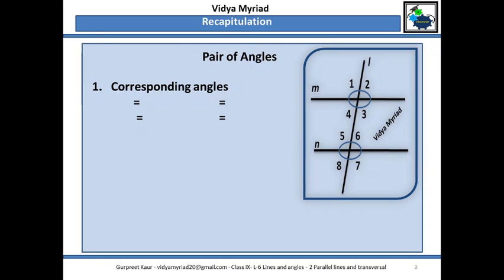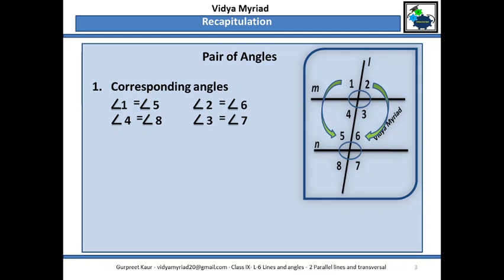Number one, we will talk about the corresponding angles. If you look here, angle 1 is equal to angle 5. That means if angle 1 is 60 degrees, then angle 5 will also be 60 degrees. Same way, angle 2 will be equal to angle 6, angle 4 will be equal to angle 8, and angle 3 will be equal to angle 7. Whenever we solve these types of questions, we will mention in brackets why they are equal — for example, angle 4 is equal to angle 8 because they are corresponding angles.